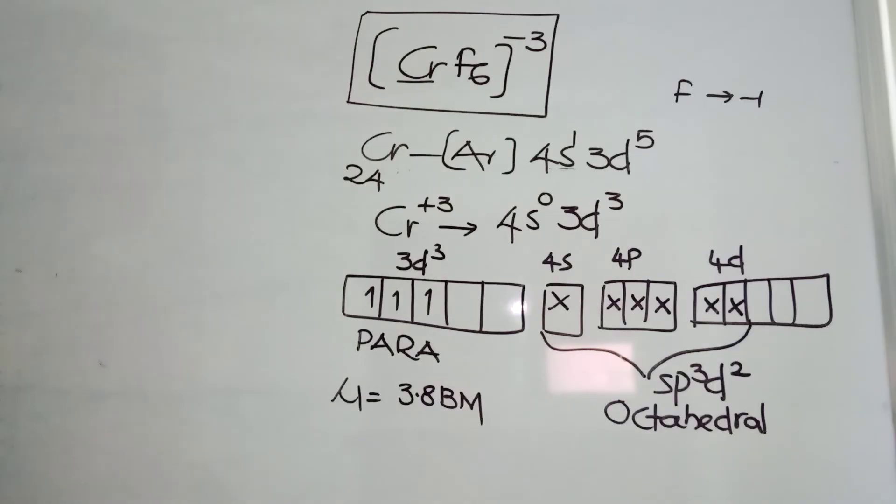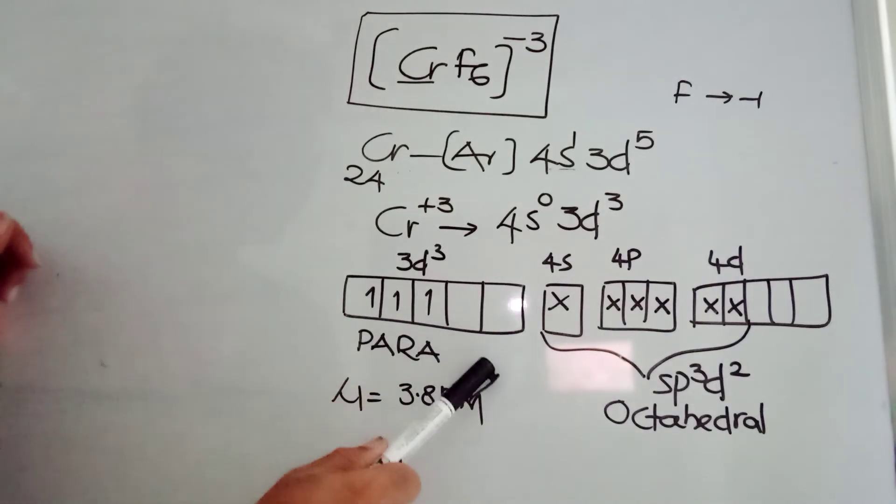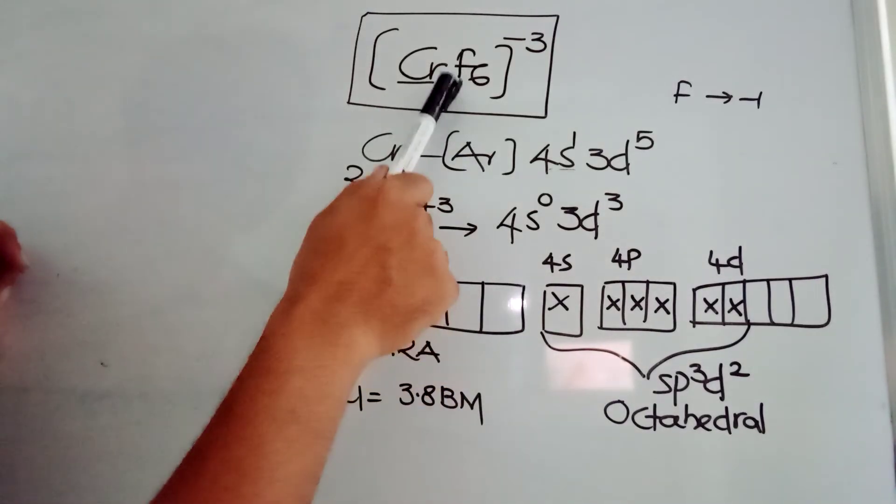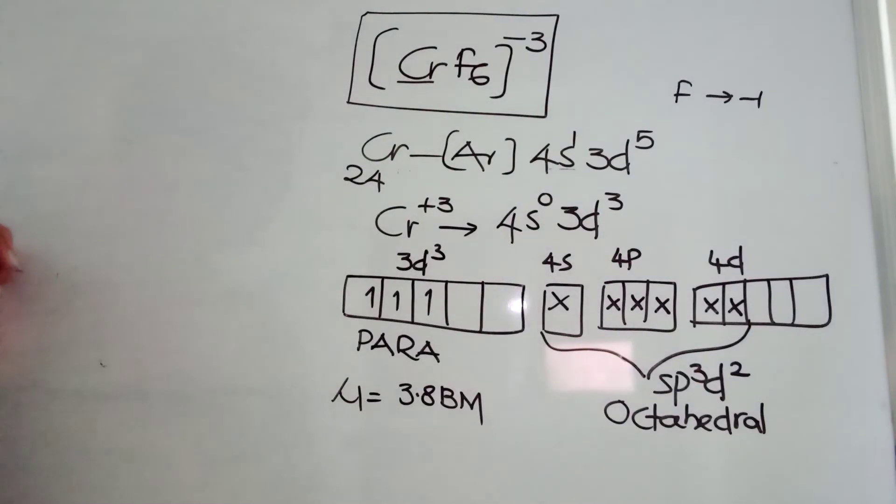It's about CrF6^3-. Don't confuse. Like D2SP3, it is not taking here, because it is a weak-field ligand. So, it is taking only outer orbitals. This complex is also called outer orbital complex, or you can call this as high spin complex.